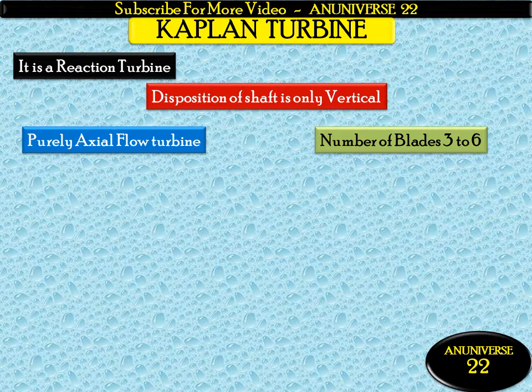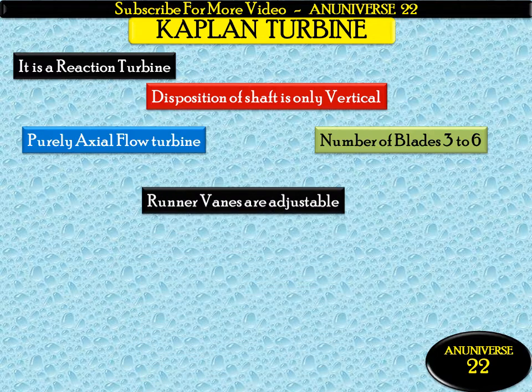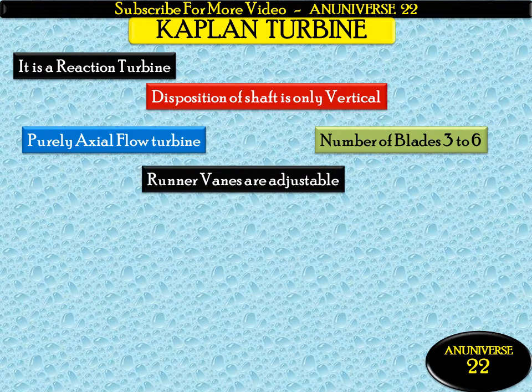Blades are made up of stainless steel and mounted on the hub. Runner vanes are adjustable. If vanes are not adjustable and they are fixed on the hub, that is the propeller turbine. But in the case of the Kaplan turbine, runner vanes are adjustable.